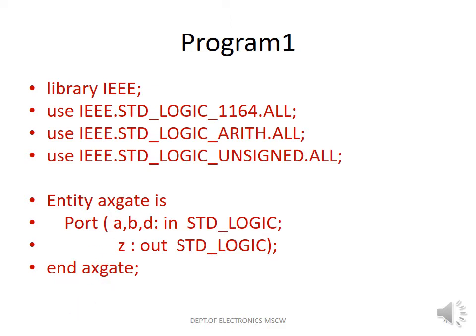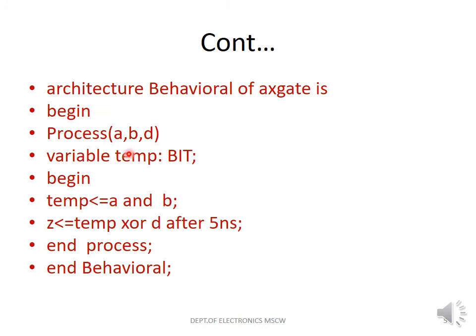We have to write the architecture part. The architecture begins with the keyword 'architecture', then the name of the architecture, then 'of', and then the name of the entity. The name of the entity is AX gate. Then comes the begin of the architecture.